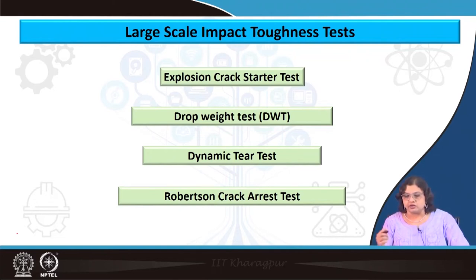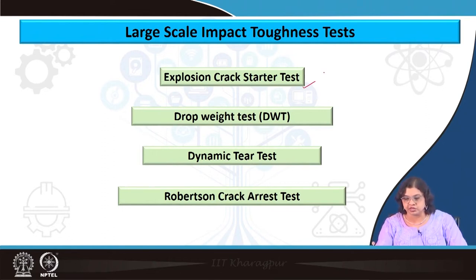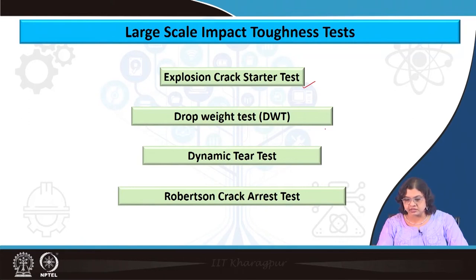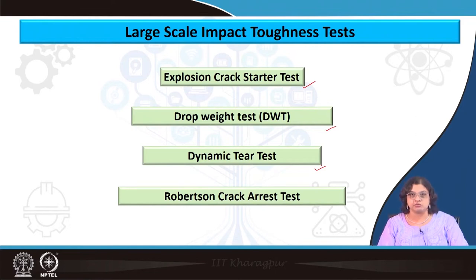The first test we will discuss is the explosion crack starter test, done on a rectangular block. Then there is the drop weight test, and the dynamic tear test, which is similar to the Charpy impact test but with a much larger specimen and higher machine capacity. Finally, we will discuss the Robertson crack arrest test.